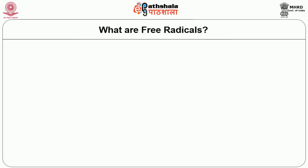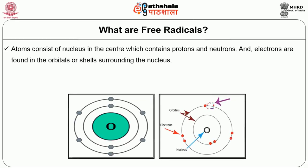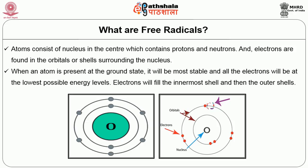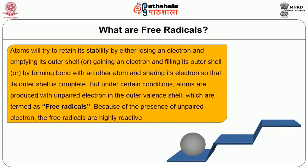Let us see about what free radicals are. Atoms consist of a nucleus in the center which contains protons and neutrons, and electrons are found in the orbitals or shells surrounding the nucleus. When an atom is present at the ground state, it will be most stable and all the electrons will be at the lowest possible energy levels. Electrons fill the innermost shell and then the outer shells. Atoms try to retain stability by losing or gaining an electron, or forming bonds with other atoms and sharing electrons. But under certain conditions, atoms are produced with an unpaired electron in the outer valence shell, which are termed as free radicals.